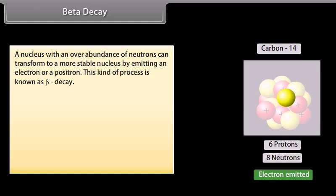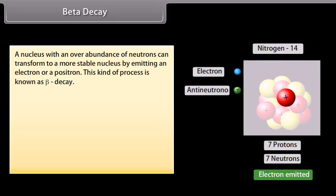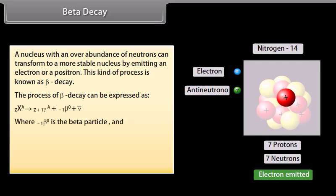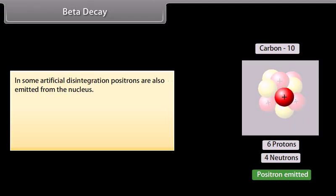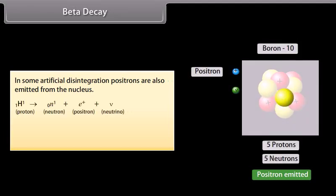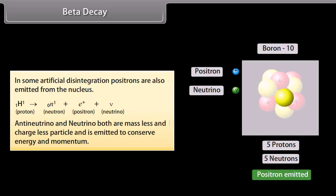Beta decay. A nucleus with an overabundance of neutrons can transform to a most stable nucleus by emitting an electron or a positron. This kind of process is known as beta decay. This process of beta decay can be expressed as, where is the beta particle and is the anti-neutrino. For example. In some artificial disintegration, positrons are also emitted from the nucleus. Anti-neutrino and neutrino both are massless and chargeless particle and is emitted to conserve energy and momentum.